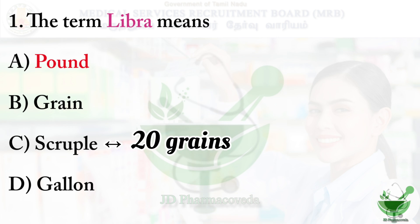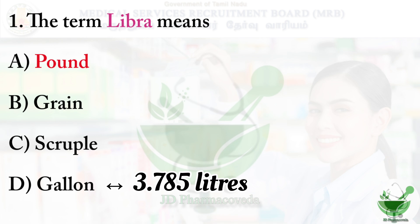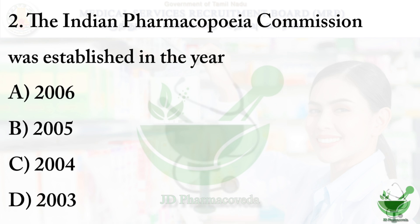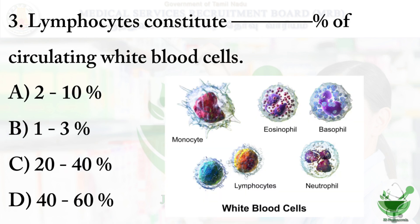One scruple equals 20 grains. One liquid gallon equals 3.785 liters. Question number two: the Indian Pharmacopoeia Commission (IPC) was established in the year — option A: 2006, option B: 2005, option C: 2004, option D: 2003. The correct option is option B, 2005.